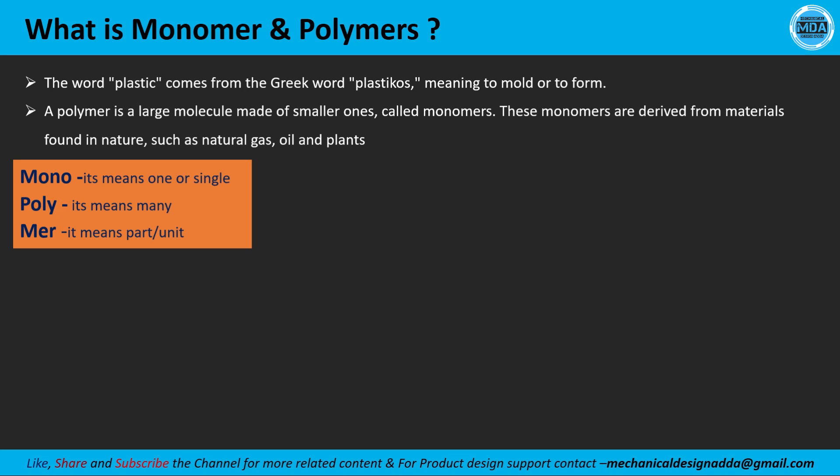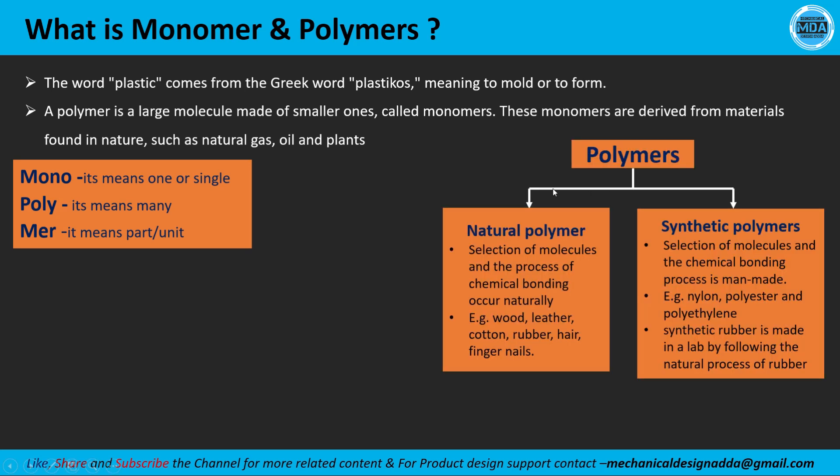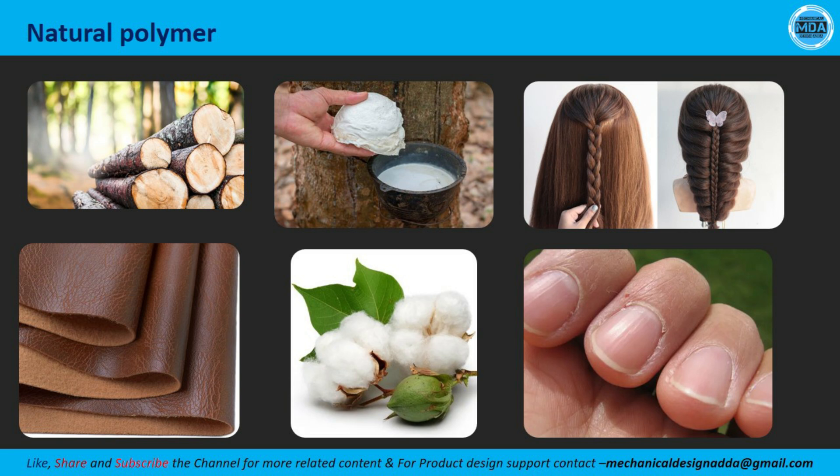We get monomers from nature — from natural gas, oil, and plants. There are two types of polymer: natural polymers and synthetic polymers. Natural polymers are naturally occurring, like wood, leather, cotton, rubber, hair, and fingernails. In these, the monomers and the process of chemical bonding occur naturally.